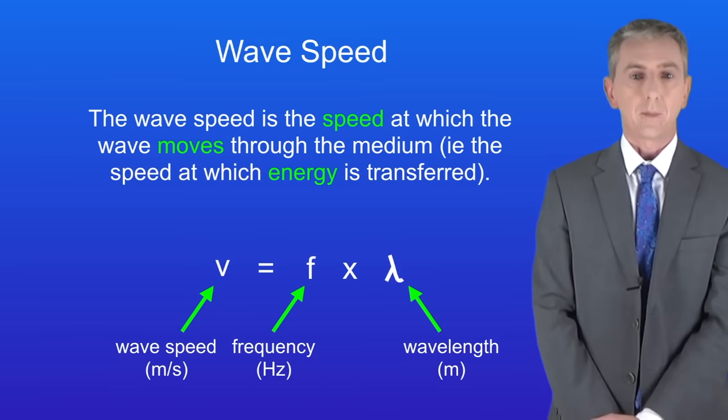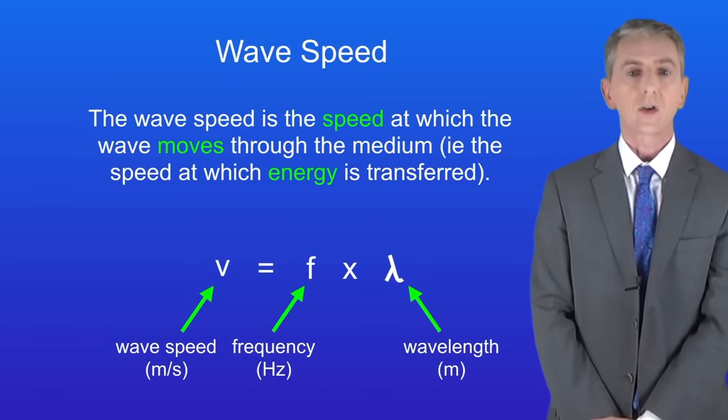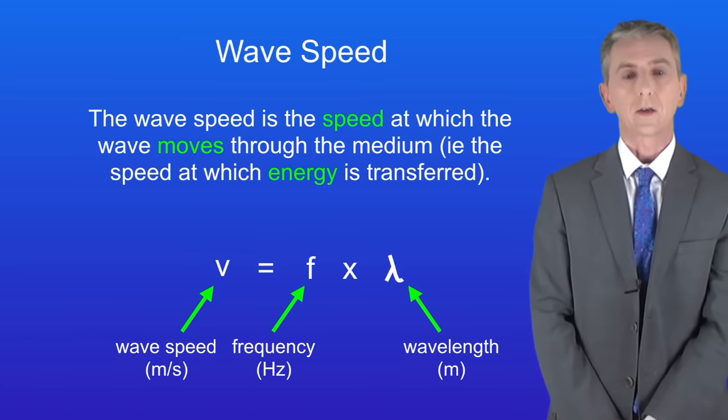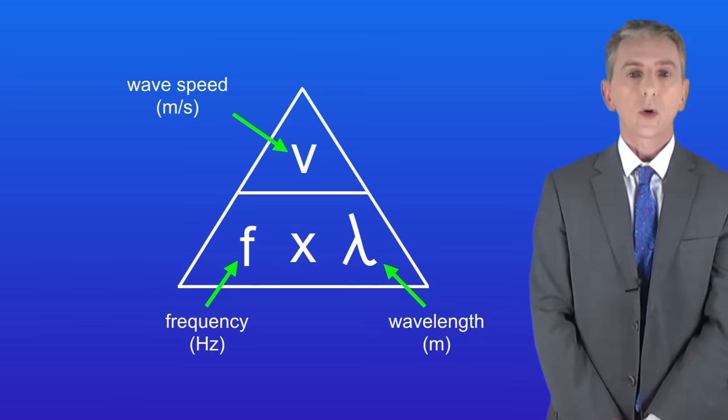The wave speed in meters per second equals the frequency in Hertz multiplied by the wavelength in meters. And you're not given this equation in the exam, so you need to learn it. I'm showing you the triangle of this equation here, and again it's worth learning this.